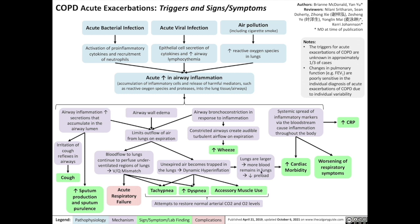Hyperinflation of the lungs results in more blood remaining in the lungs, reducing the preload delivered to the left side of the heart. This results in increased cardiac consequences, especially in patients predisposed to heart disease. Another consequence of acute increases in airway inflammation is bronchoconstriction, which not only further limits expiratory airflow, but the constricted airways also create audible, turbulent airflow on expiration heard through a stethoscope as a wheeze. These exacerbations of COPD will oftentimes result in the patient's underlying wheeze being more audible than before.